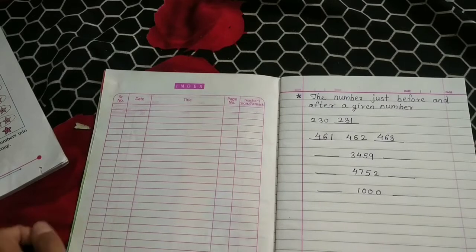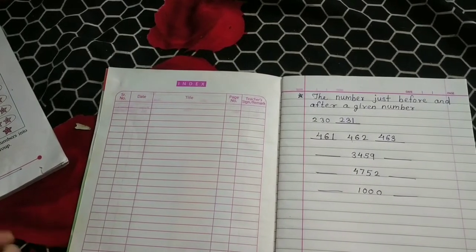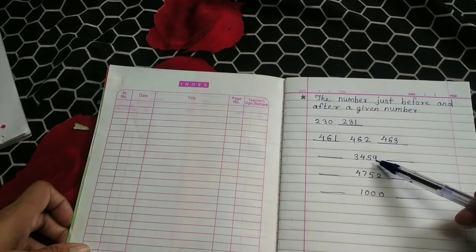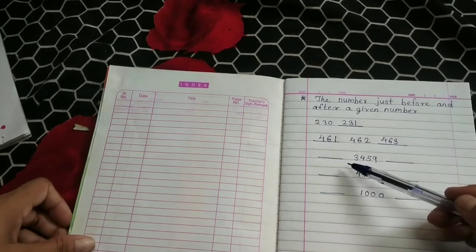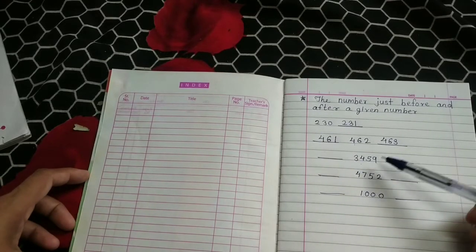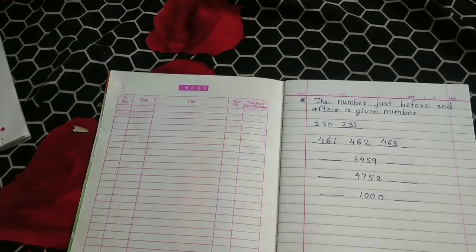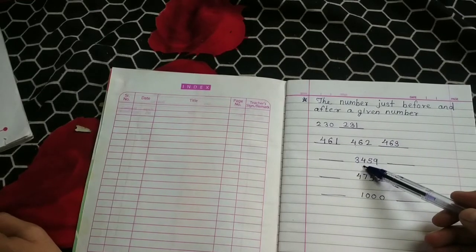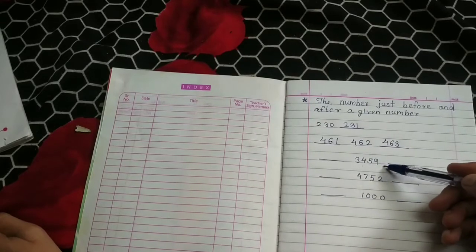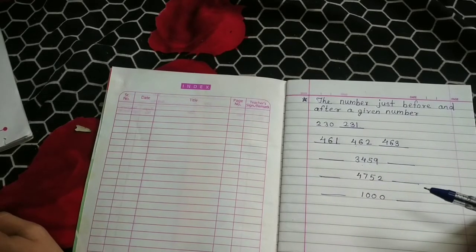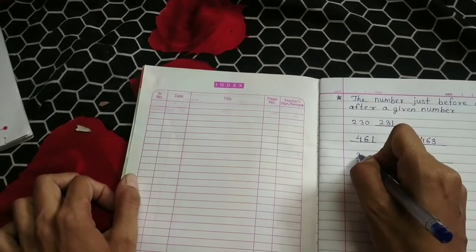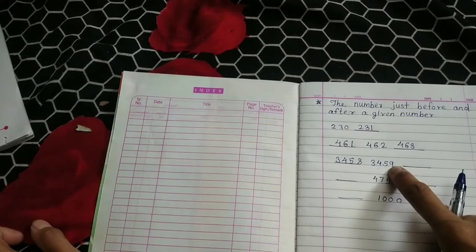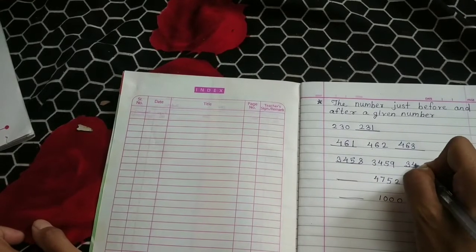Here I give you some examples of four-digit numbers. The number is 3459. Which number will come before? Think about the number smaller by 1. Before 59 is 58, so the before number is 3458. And after 59 is 60, so the after number is 3460.